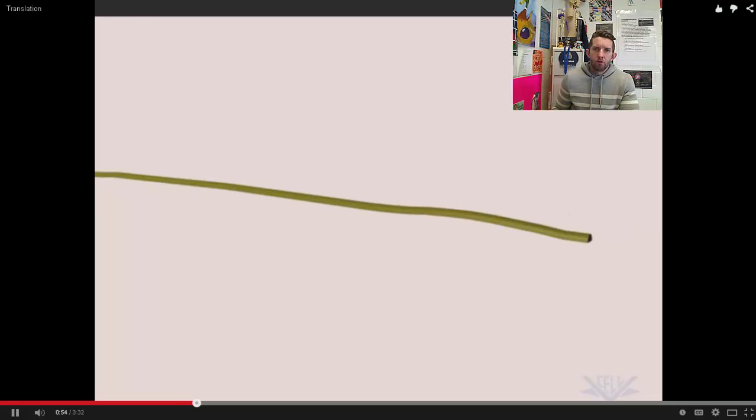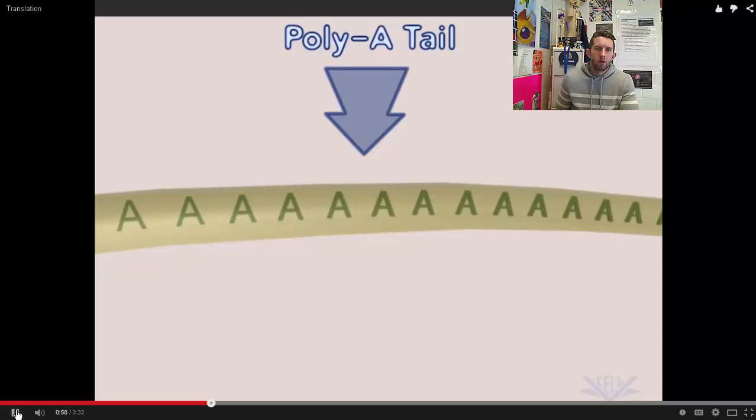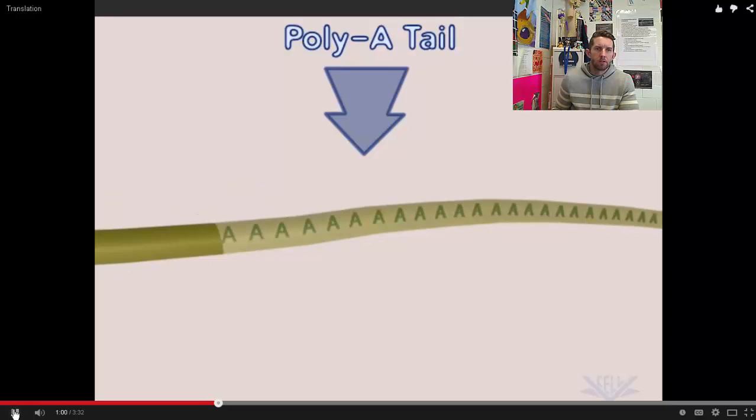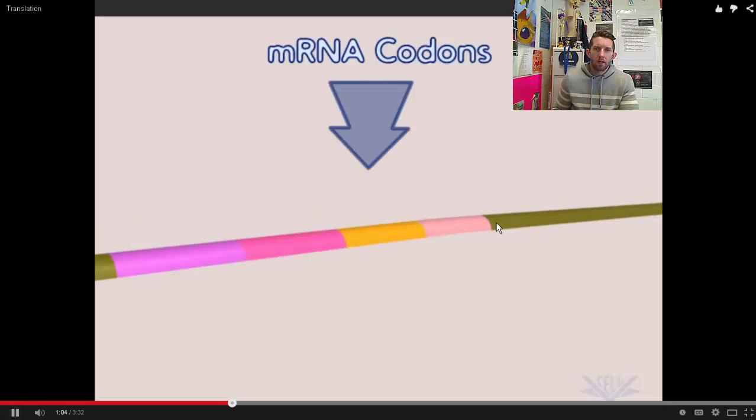This is going to go and it's going to feed through our ribosome. Now, notice that these are codons. And codons are made up of a series of 3 mRNA nucleotides. Three successive nucleotides is an mRNA codon: an AUG, a UUA, et cetera. That would be a codon.